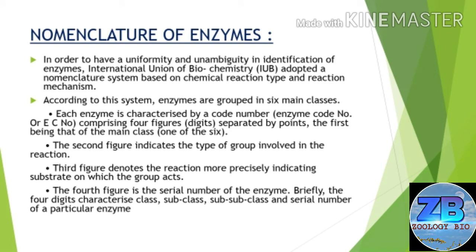In order to have uniformity and avoid ambiguity in identification of enzymes, the International Union of Biochemistry (IUB) adopted a nomenclature system based on chemical reaction type and reaction mechanisms. According to this system, enzymes are grouped into six main classes. Each enzyme is characterized by a code number — the EC number — comprising four digits separated by points. The first digit indicates the main class, the second indicates the type of group involved, the third denotes the reaction more precisely indicating the substrate, and the fourth is the serial number of the enzyme.